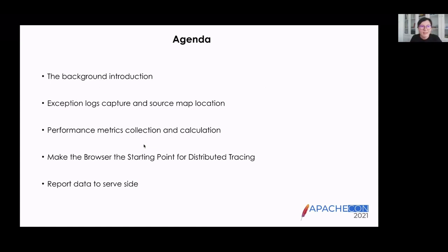Let's see the agenda. There are five parts including: background introduction, when we implement browser agent, exception node capture and source map location, performance metrics collection and calculation, making the browser the starting point for distributed tracing, and finally, reporting data to the server.